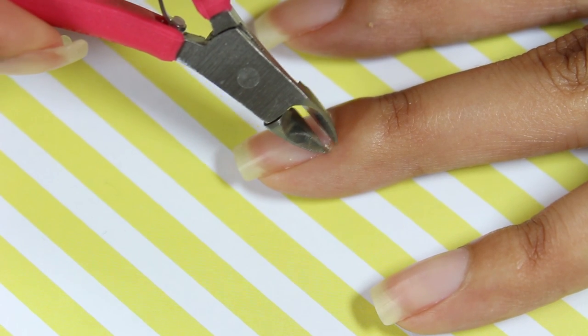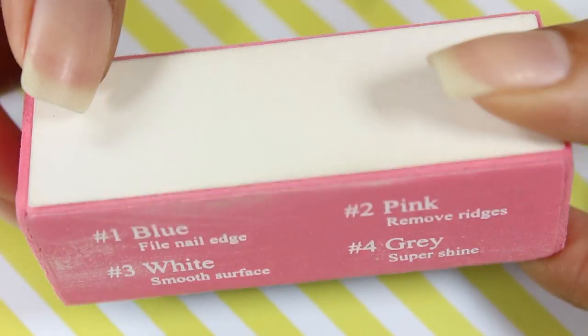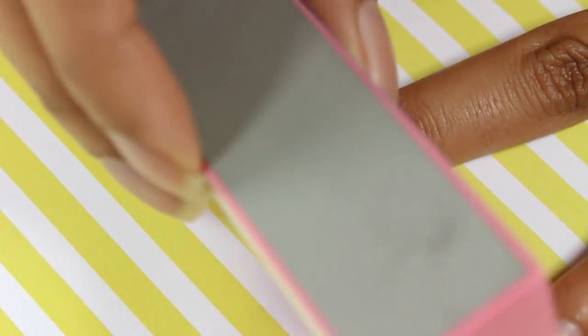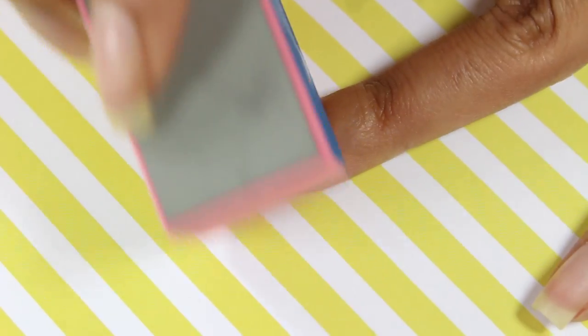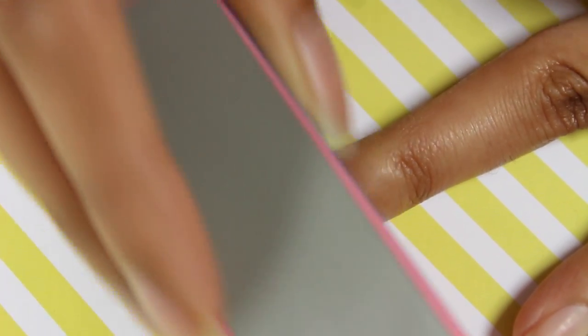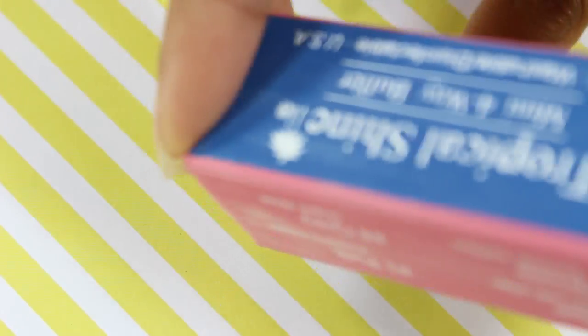I use a cuticle cutter to cut off any extra skin. Next, using a four-way buffer I use the pink, white and gray sides on all of my nails. I use the pink side first to remove any ridges on the surface of the nail and I do this just by swiping it back and forth across the nail. If your nails are on the thinner side I suggest you skip this step so that you don't make your nails even more thin and weak.